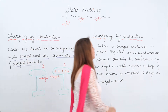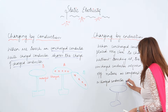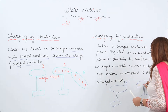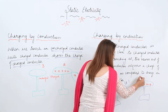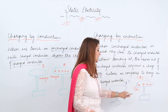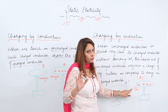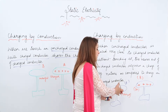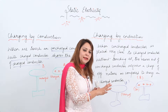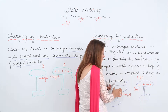Now let's look at charging by induction. Suppose we have one uncharged body A placed on a stand, and charged body B with a positive charge. When I bring the charged body close to the uncharged body — I am not touching them — we are just placing the uncharged body closer to the charged body. The uncharged body contains atoms with protons and electrons. Because body B is positively charged, it will attract the electrons present in the uncharged body towards itself.